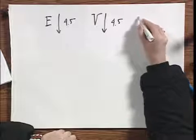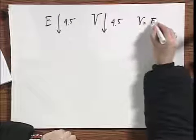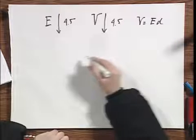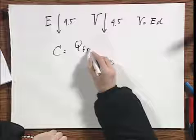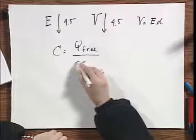Because remember, the potential difference is simply E times d, and d is not changing. C equals Q free divided by the potential difference.